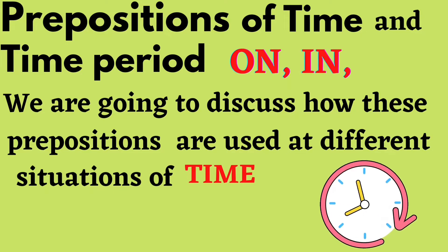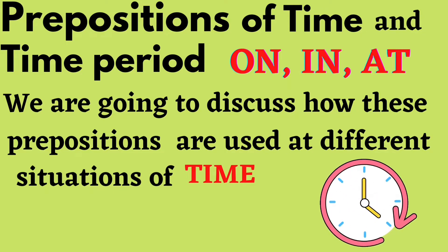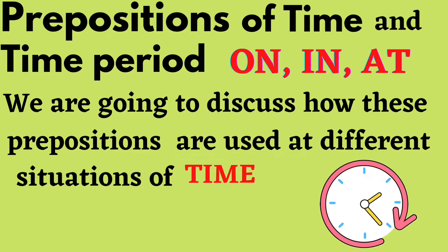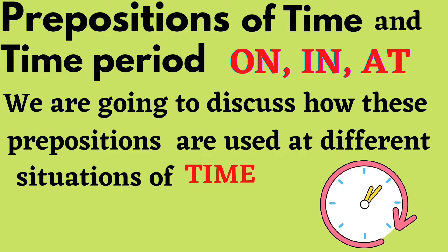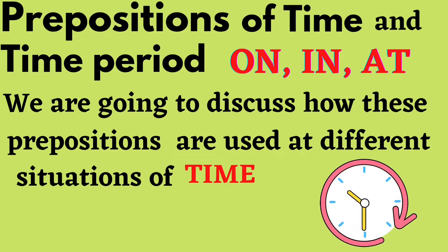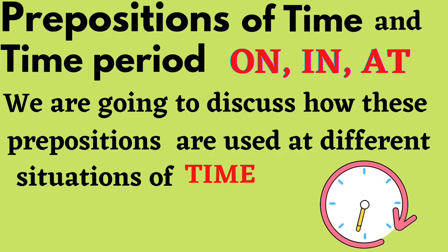ON, IN, AT — these are the prepositions of time and time period. We are going to discuss how these prepositions are used in different situations of time. In English, these are the words used to indicate time context and their usage in various situations. These are small words, but without them we cannot tell the relationship of the nouns in a sentence.